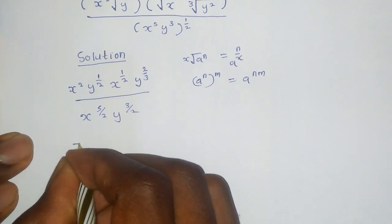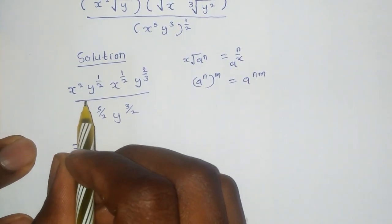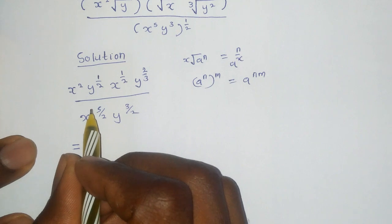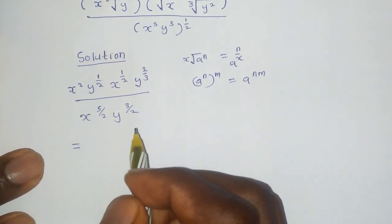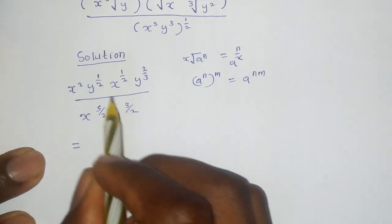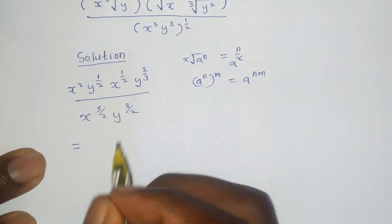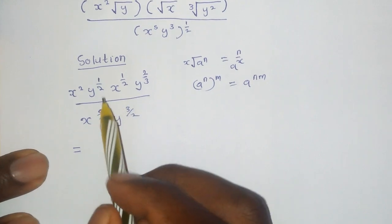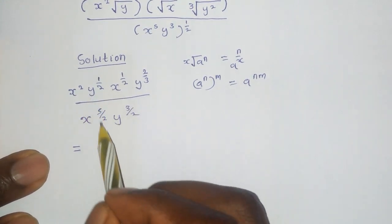So, we continue from here. This, when, for example, in exponents, when we are dividing, it means we subtract the powers. But when you are multiplying, it means we add the powers. But in this case, when we look at the like terms,